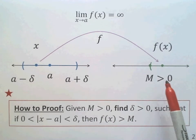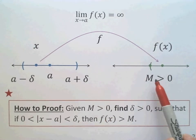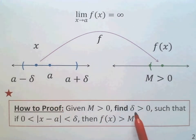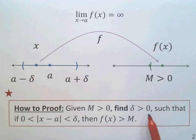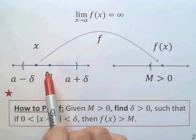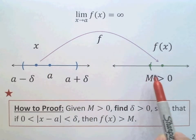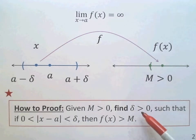How do we prove this? All we need to do is: given any arbitrarily large number M greater than zero, find a delta greater than zero such that as x goes into the delta neighborhood of A, F is greater than the positive number M. Finding the delta is the most important step.